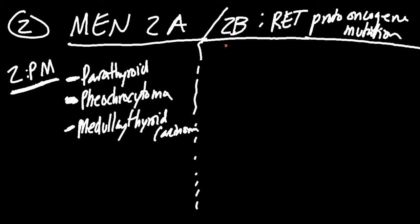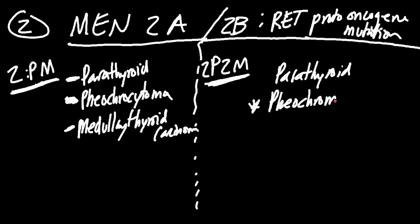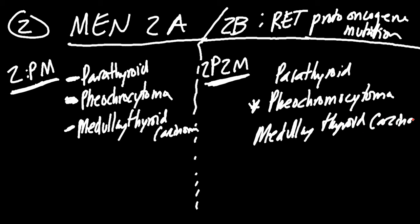Lastly, MEN-2B. This is going to be 2P-2M. We're talking mainly about 2P neoplasias and 2M neoplasias. Our 2Ps are parathyroid, not as important, but the main one is pheochromocytomas. And then our 2Ms are, again, medullary thyroid carcinoma.